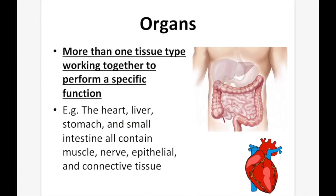Organs. After cells and tissues, we have organs. Organs are a collection of tissues all working together to perform a specific function. For example, the heart, liver, stomach, and small intestine all contain muscle, nerve, epithelial, and connective tissues — different tissue types working together to perform a specific function.